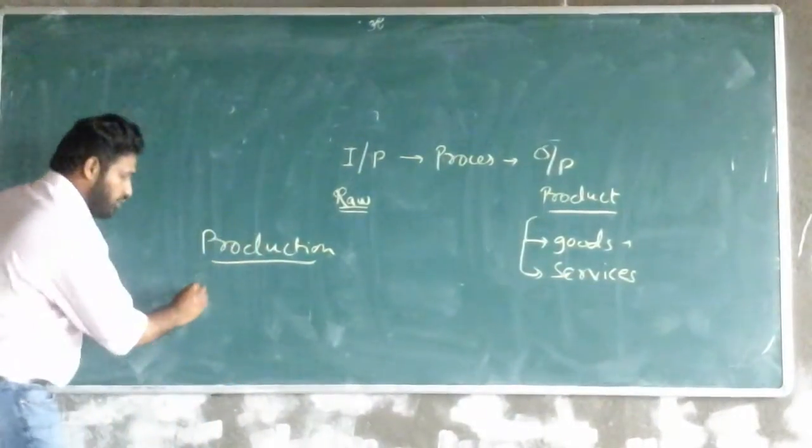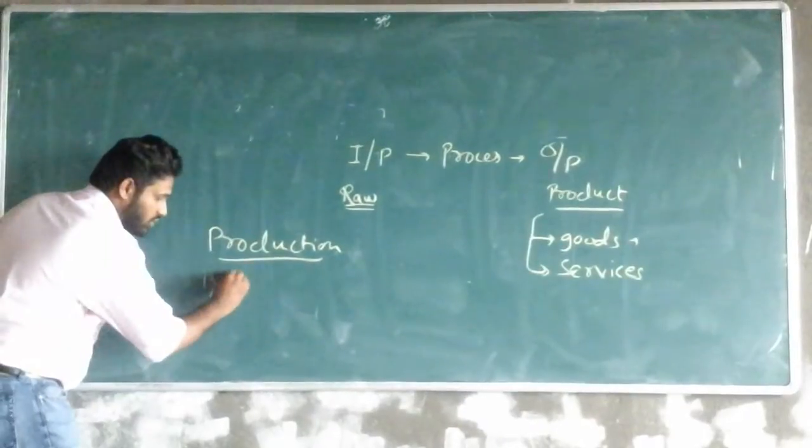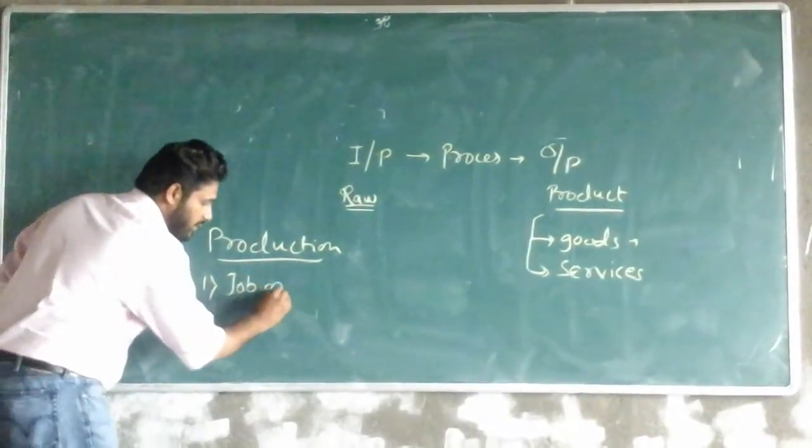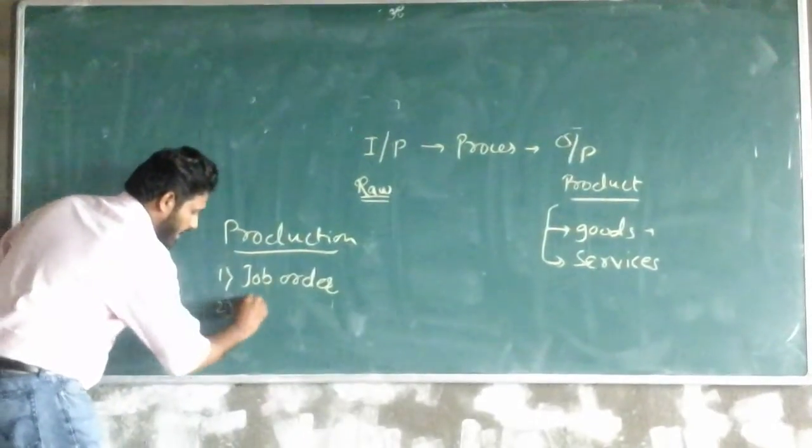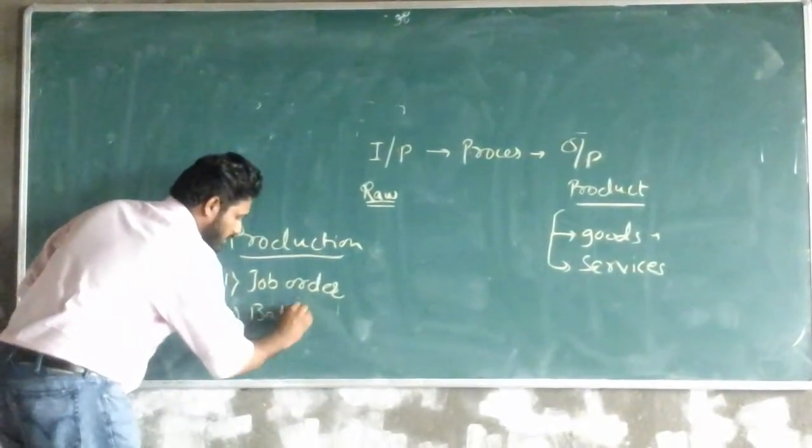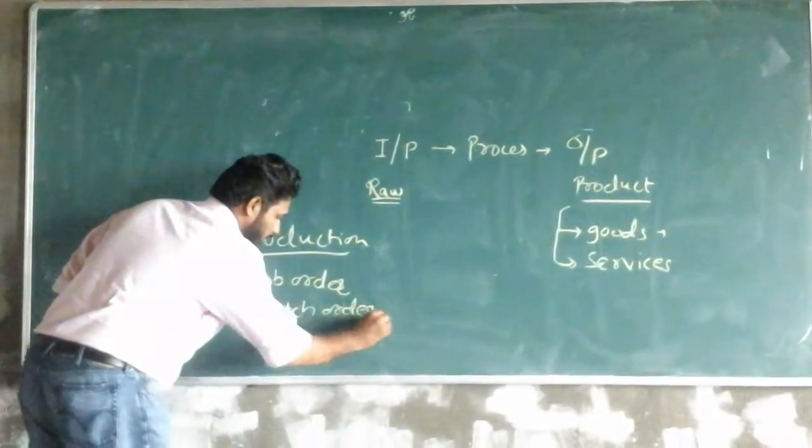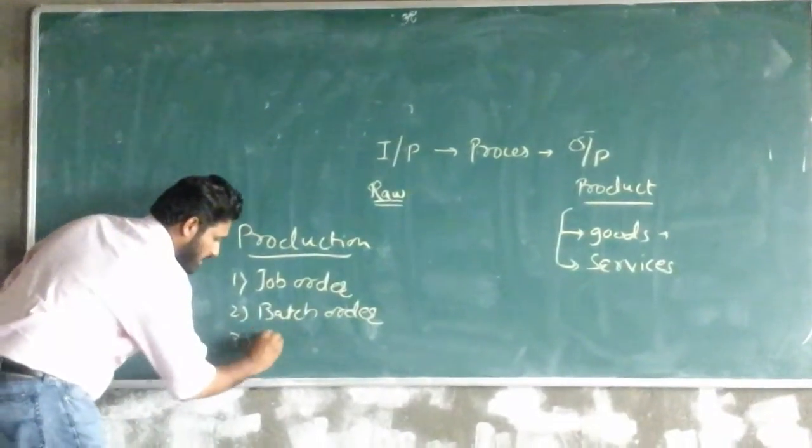Now production is again divided into three types. One, job order. Second, batch order. Third, mass order.